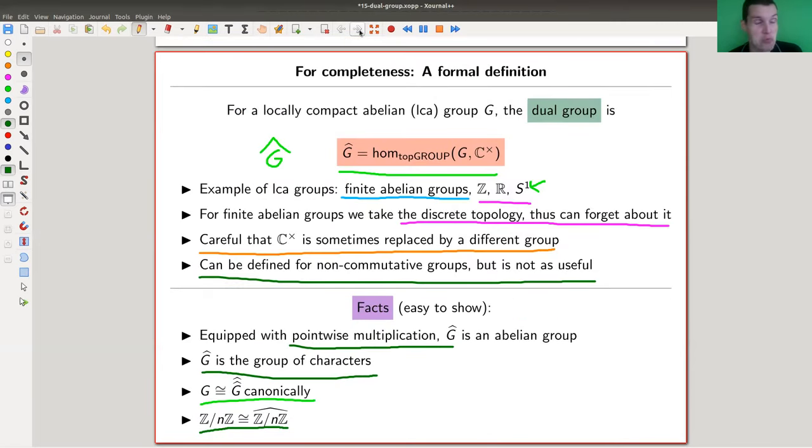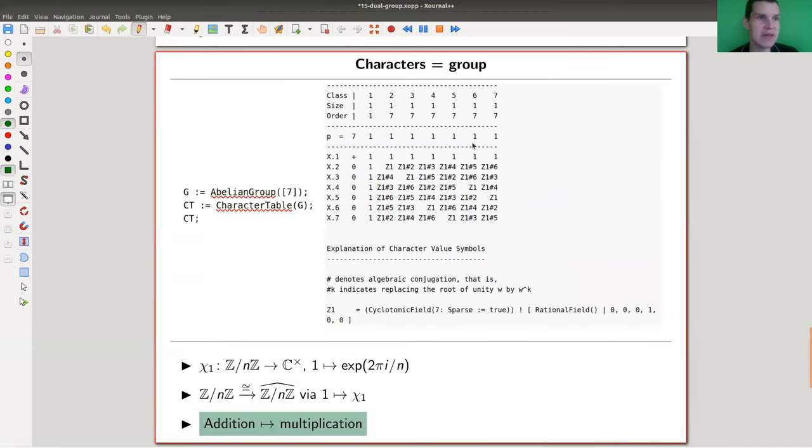That's a dual group. It's pretty nice, like a dual vector space, pretty cool. And in some sense, a pretty straightforward concept. And really, the characters are the main players. So the main idea is same picture as before, my Z mod 7. And the map, a character is nothing else with chi1 here. Actually, it's chi2. I should have written chi2.